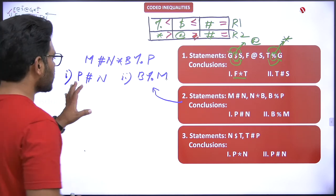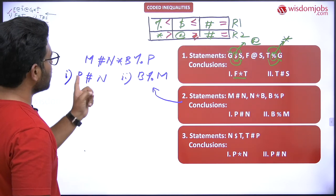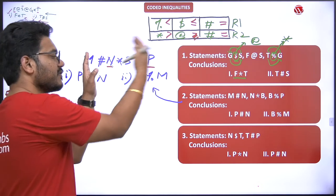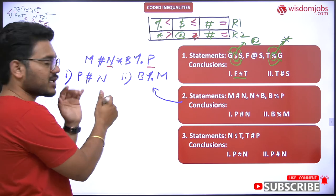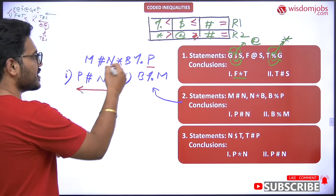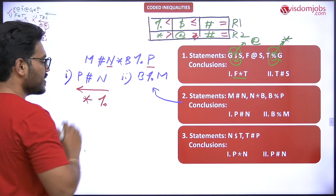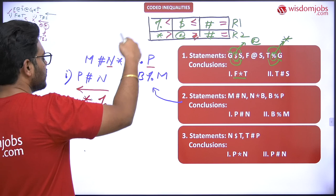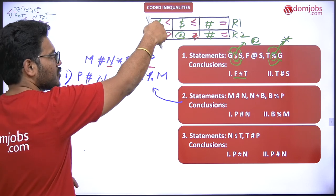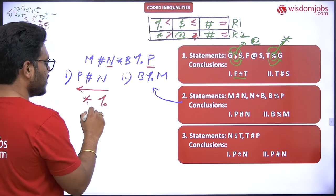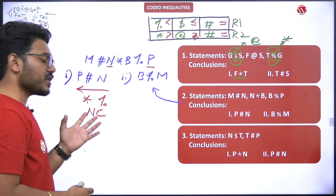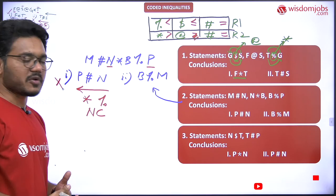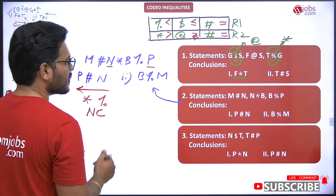Conclusion one is b percentile m. Let's check the relation between p and n first. n is on the right side, so we are establishing a backward relation. The symbols in between are percentile and star. Checking whether they fall in the same row — they do not; they are in different rows. So a certain relation cannot be established. The first conclusion does not certainly follow.